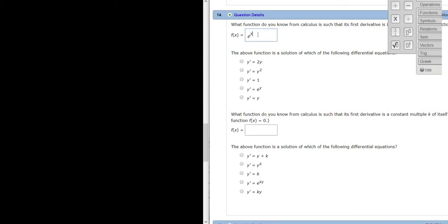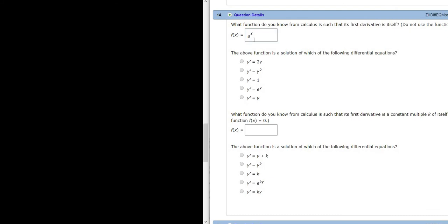e to the x is the only function beside 0 where if you take the derivative of e to the x, you get e to the x. What does that mean? That means that the rate of change of the function is equal to the height of the function